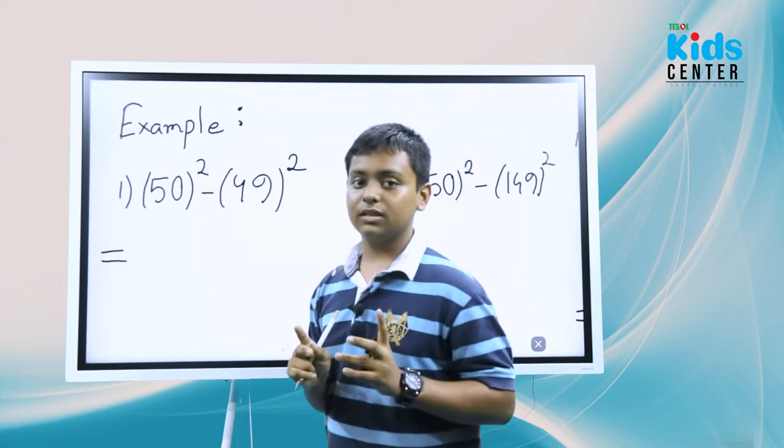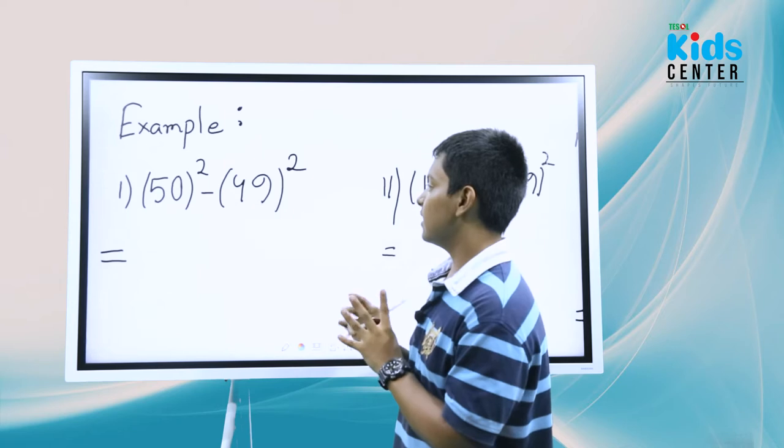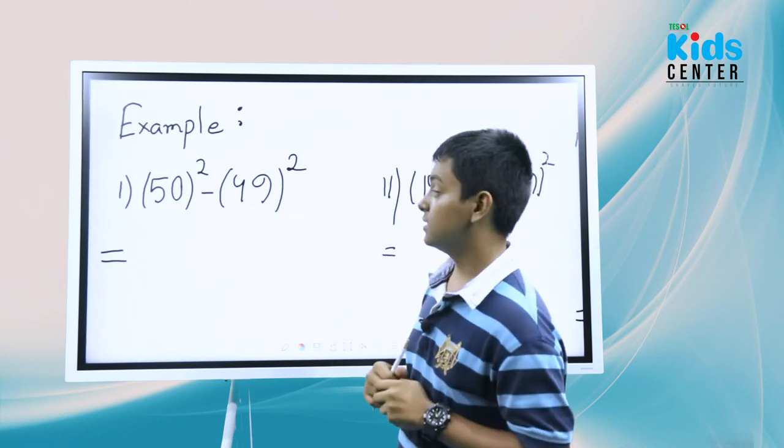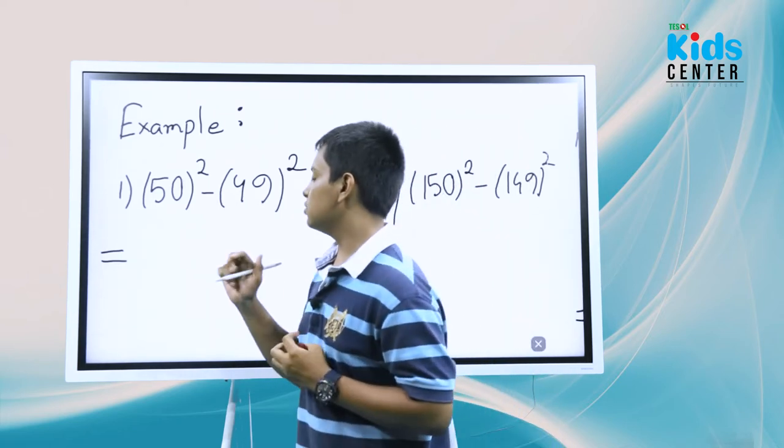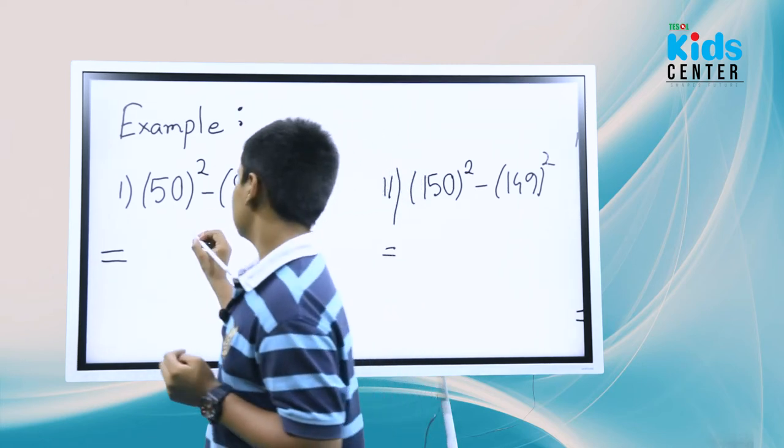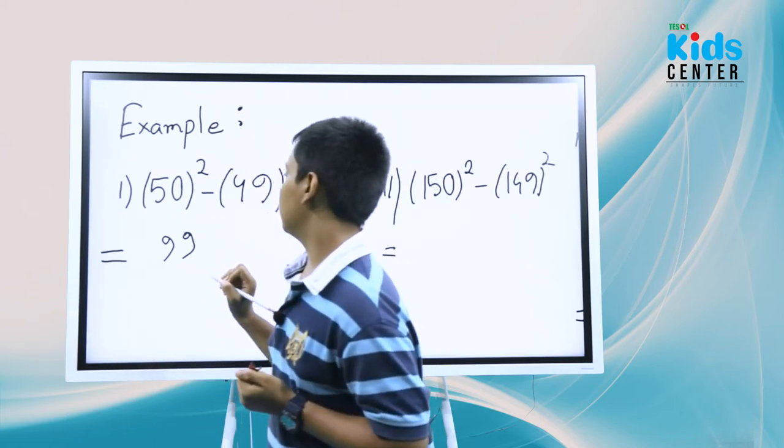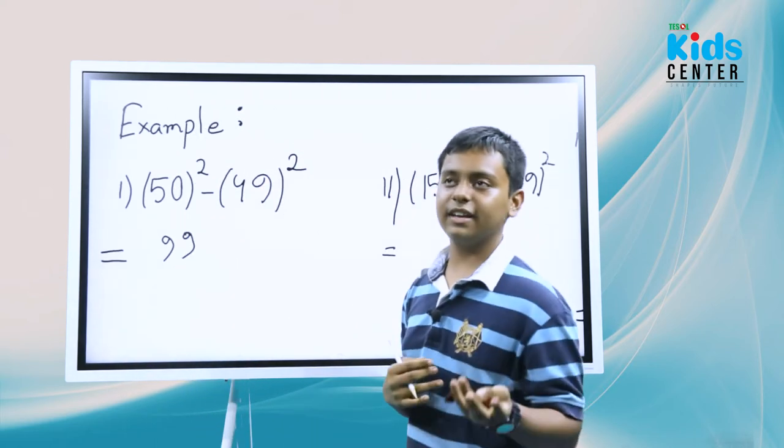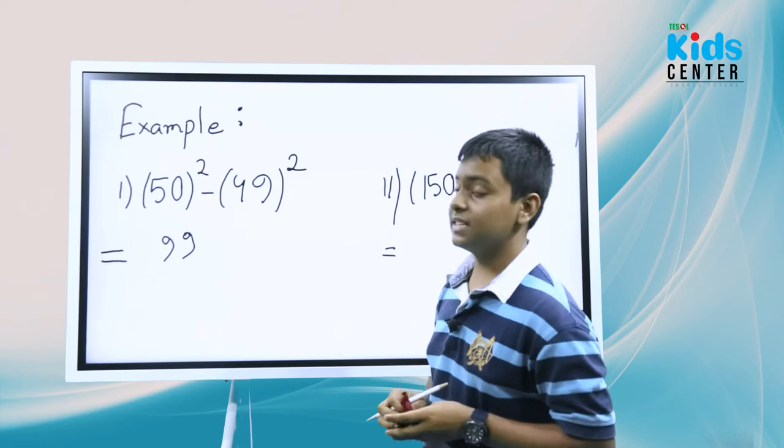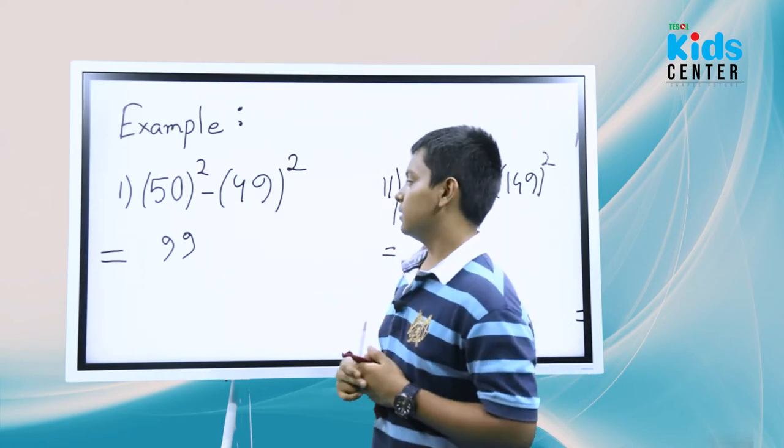But I have an easy trick that will only take one second. What we're going to do is 50 plus 49 equals 99. Now if you check in your calculator or any calculating device, then you will see that the answer is correct. That's the trick.